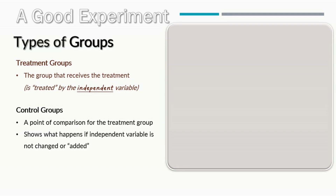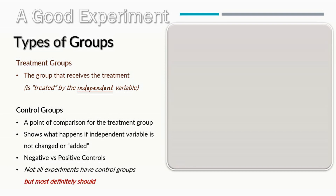Other than maybe your treatment doesn't work, so this is very important. Now within control groups there are two main kinds of controls: positive and negative controls. Keep in mind that not all experiments have control groups, but most definitely should. All of the experiments that you are running in Life 102 Biology should probably have control groups.